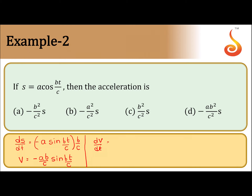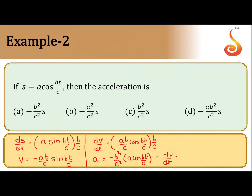dv by dt will give you minus ab by c, derivative of sine is cosine — cos bt by c — and derivative is b by c. Finally we get acceleration equals minus b square by c square into a cos bt by c, which is nothing but dv by dt equals acceleration equals minus b square by c square into s.